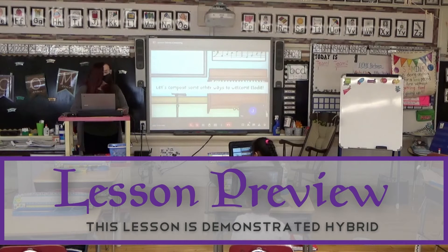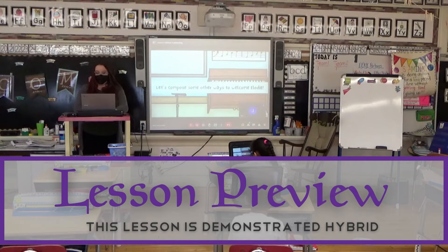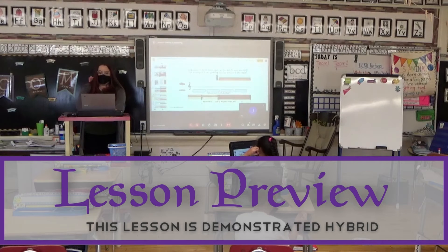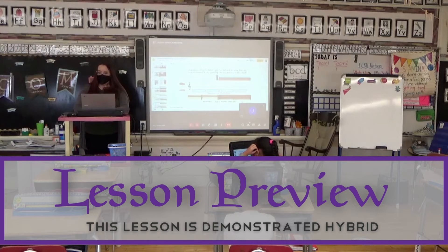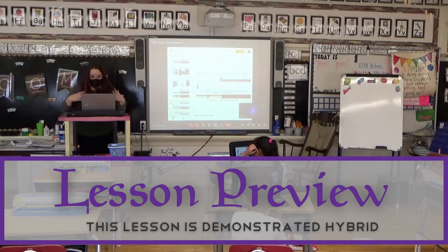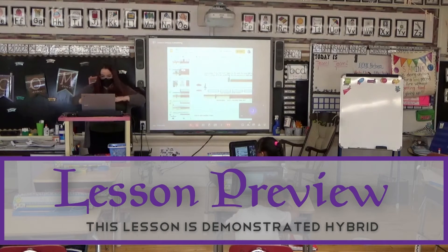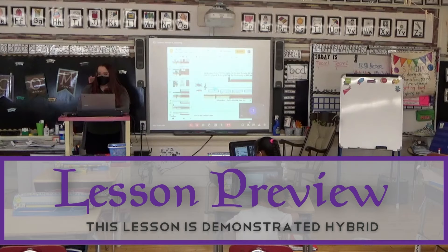So now we're going to work as a class to write some other ways to welcome Elodie. On my screen it says drag the hand signs for so and mi onto the staff to compose a new greeting — do this activity in edit mode. We're going to write our own melody to Elodie. Can anybody tell me what should we go with first — so or mi? Juan, which one do you want to start with? So. All right, I'm going to drag so right here.